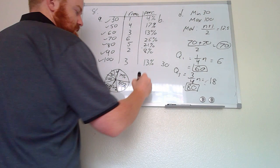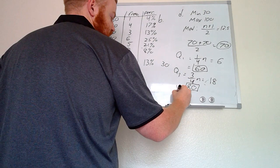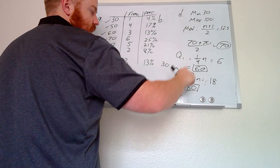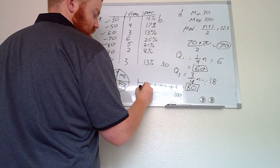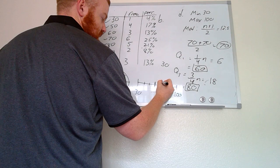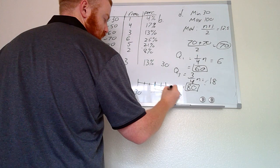Now we draw the box plot. Plot the minimum at 30 and the maximum at 100. Mark Q1 at 60, the median at 70, and Q3 at 80. Draw a box around those three middle values (Q1, median, Q3) and extend whiskers out to the minimum and maximum. That is our box plot, showing the five-number summary visually.